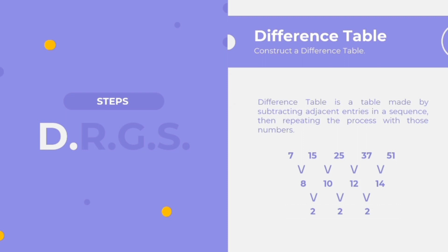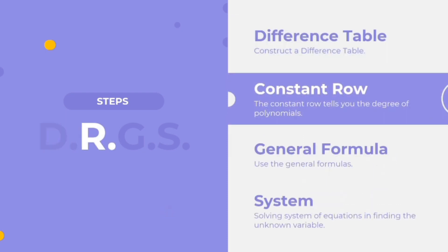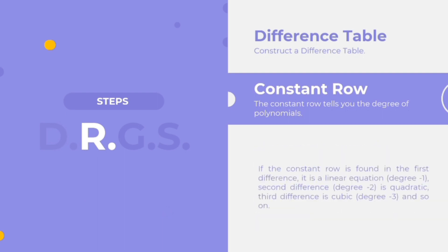The second step is the constant row, which tells us the degree of the polynomial. If the constant row is found in the first difference, it is a linear equation with a degree of 1. A second difference with a degree of 2 is quadratic. A third difference is cubic with a degree of 3, and so on.